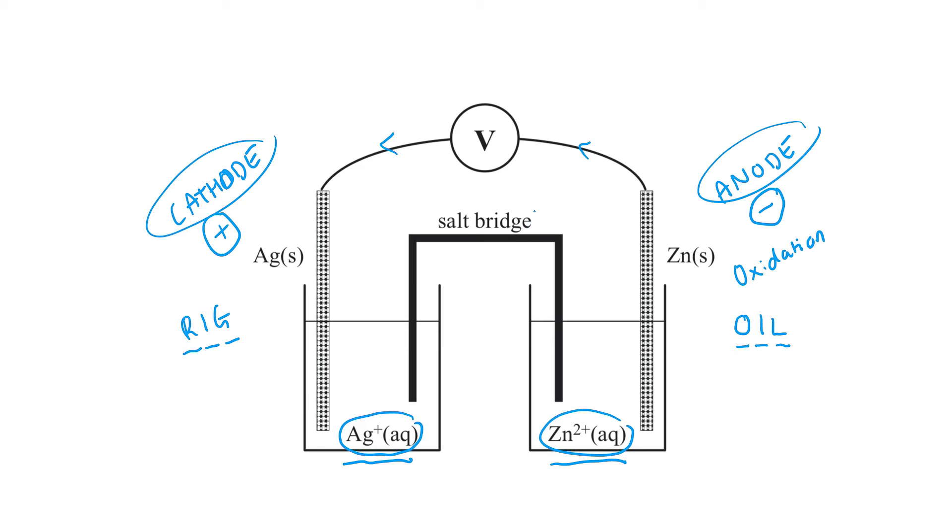Now, the purpose of a salt bridge in a galvanic cell is to maintain electrical neutrality. What this means is that it stops a buildup of charge. We will have an electrolyte in here, usually with positive ions and with negative ions.